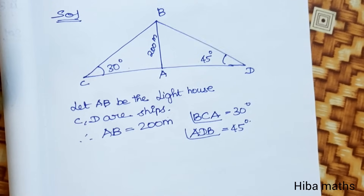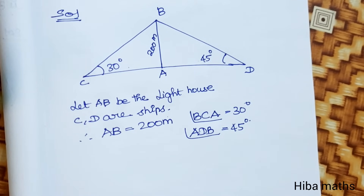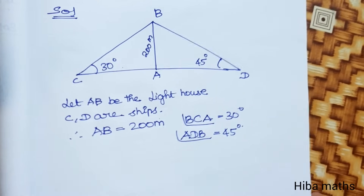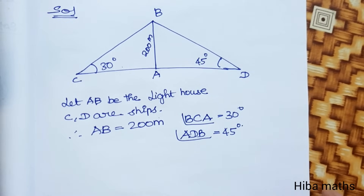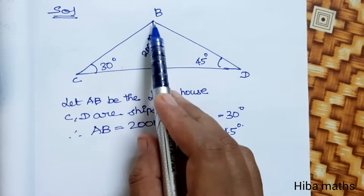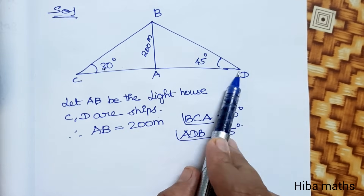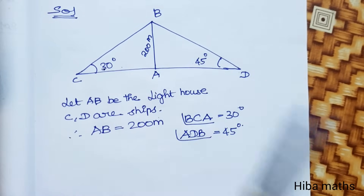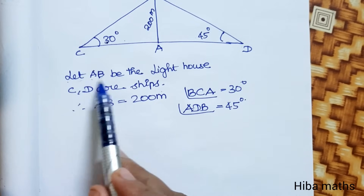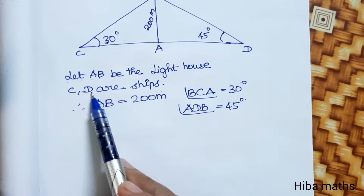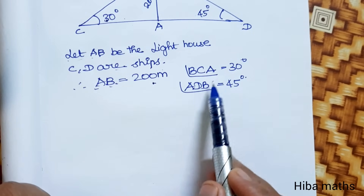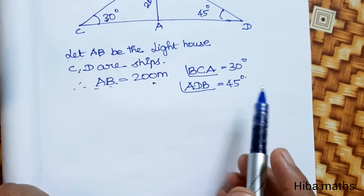In the book there is a diagram we have to explain. AB is the lighthouse and its height is 200 metres. CD represents the two ships. The angle at BC is 30 degrees and the angle ADB is 45 degrees.